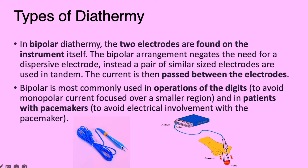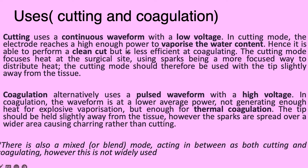The bipolar arrangement negates the need for a dispersive electrode. Instead, a pair of similar-sized electrodes are used in tandem and the current is passed between them. Bipolar is mostly used in operations of the digits to avoid monopolar current focused in a smaller region, and is used in patients with pacemakers to avoid electrical involvement of the pacemaker.